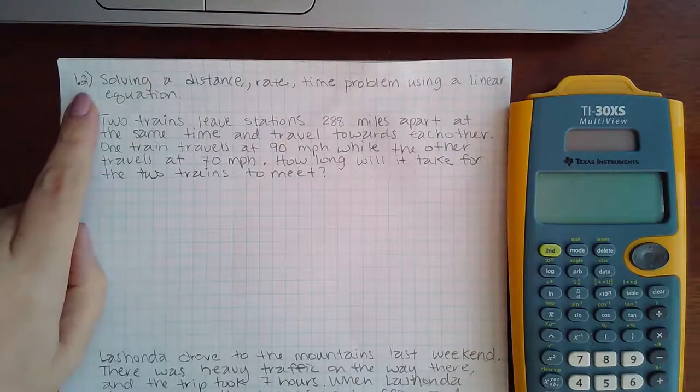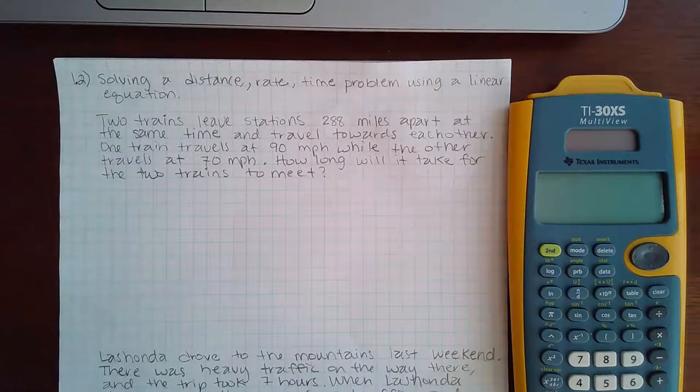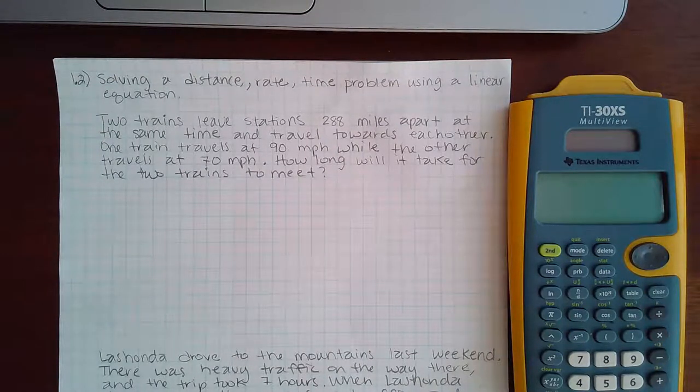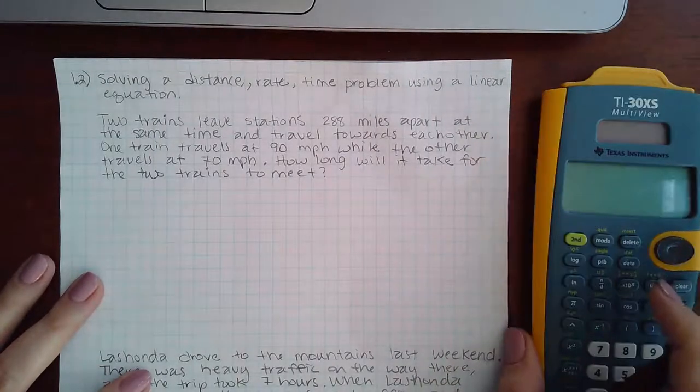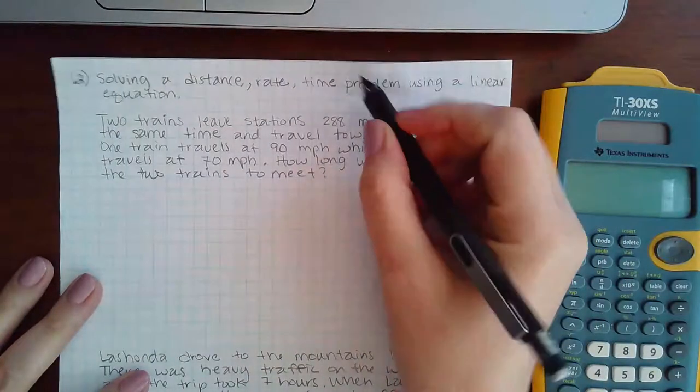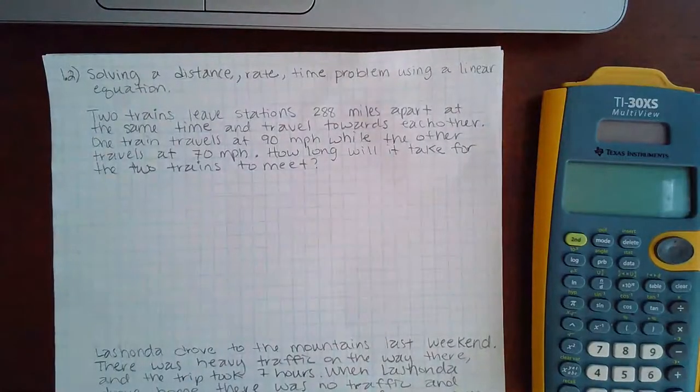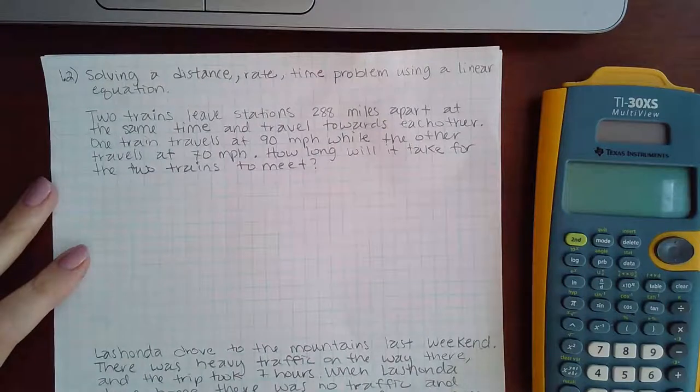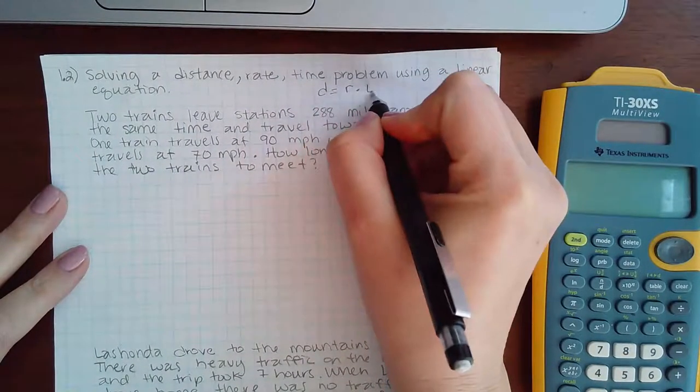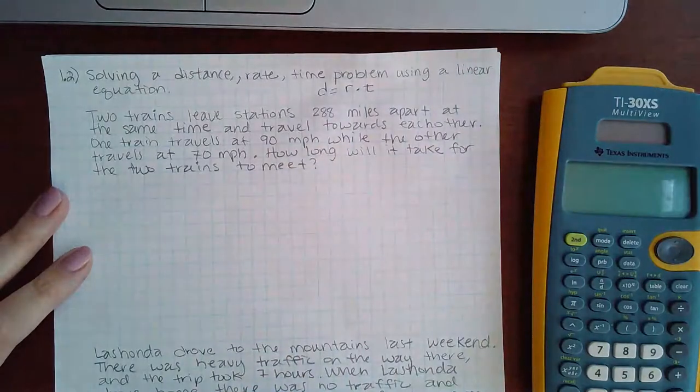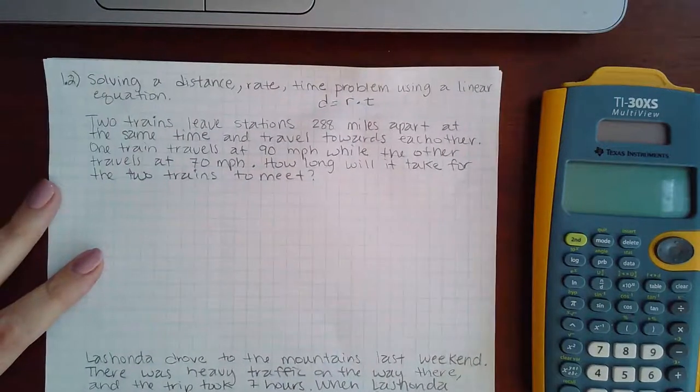Here we have section 1.2, solving a distance-rate-time problem using a linear equation. Now before we continue, we need to know the distance-rate-time relationship. Distance can be calculated by taking your rate times your time, and so we'll use this information.